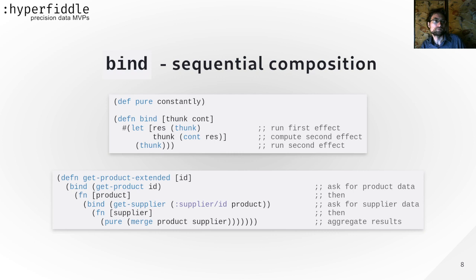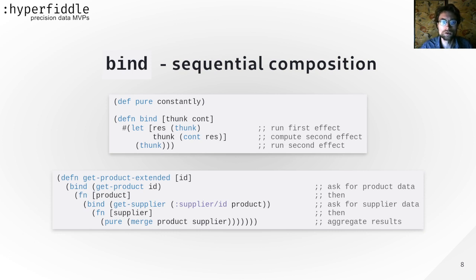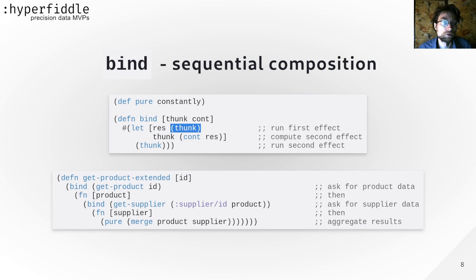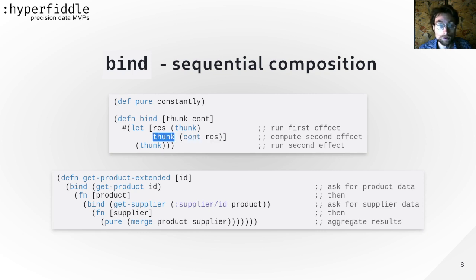Let's define operators: pure and bind. These are the bread and butter of Haskell programmers. Pure takes an arbitrary value and turns it into an effect — it returns the effect that always terminates with that value. Bind is about sequential composition: do something and then do something else. It takes an effect and a continuation function, constructs an effect that runs the input effect, gets the result, passes it to the function, computes the next effect, runs that effect, and its result becomes the result of the bind.